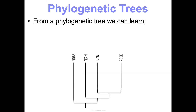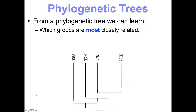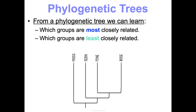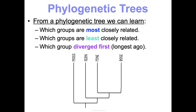From these trees we can learn which species are considered most closely related and which are least closely related. We can also see which species or group of organisms diverged first or longest ago. Some phylogenetic trees also have time scales, so we can estimate when divergence happened as well.